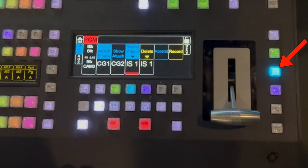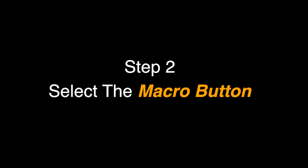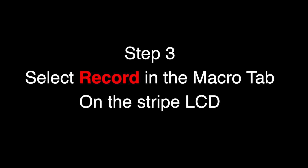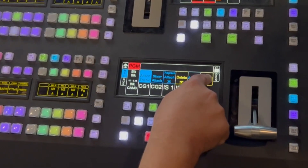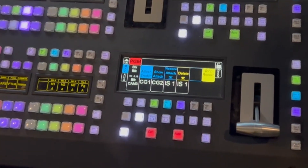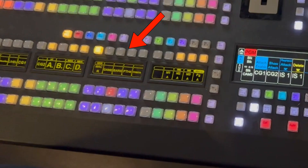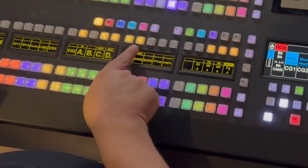The first thing you need to do when building an animated wipe is make sure that all the keys are turned off. Next, select the macro button, then on the Stripes LCD make sure you're in the macro tab and click record a new macro. After clicking record, select one of the blank macro buttons.